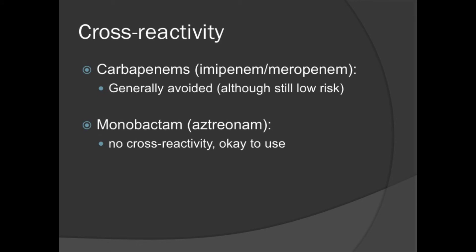Carbapenems — imipenem and meropenem — we don't use a lot in the ER. They are low risk but do have some similar side chains, so they are generally avoided in people with anaphylaxis to penicillins. The monobactam aztreonam has very low immunogenic potential. There is no cross-reactivity between penicillins and aztreonam, so it's fine to give aztreonam to someone with a penicillin allergy.